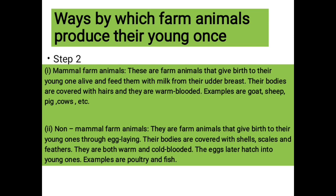We are going to understand how to identify non-mammals. Their bodies are covered with shells — talking about the snails — their bodies are covered with scales and feathers. They are both warm and cold-blooded. For example, poultry birds are warm-blooded, and fishes are cold-blooded because water is their natural habitat. So they remain cold until they leave the water. The eggs later hatch into young ones.